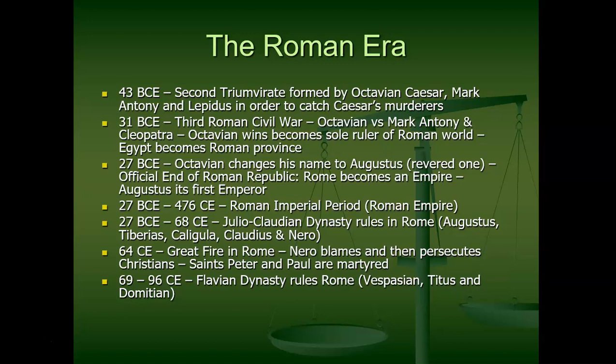The first dynasty is the Julio-Claudian dynasty, ruled by people related to the Julian and Claudian families. Julius Caesar comes from the Julian family. This covers Augustus himself, then his adopted son Tiberius, then Caligula — who is a nephew of Augustus — then Claudius, grandson of Augustus, and finally Nero, Claudius's adopted son, who is the last of the Julio-Claudians. You've probably heard a million stories about these emperors; the more infamous ones are Tiberius, Caligula, and Nero.